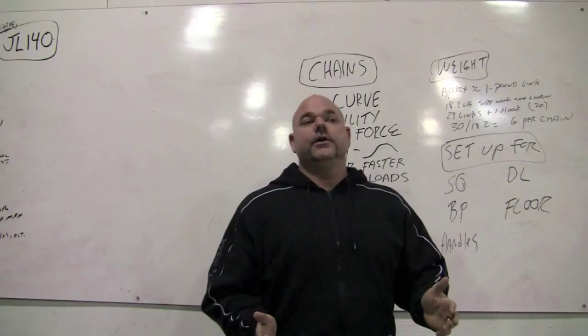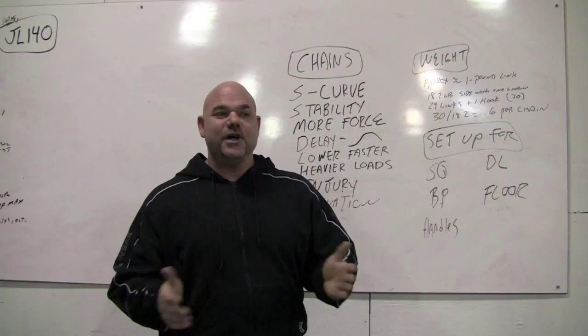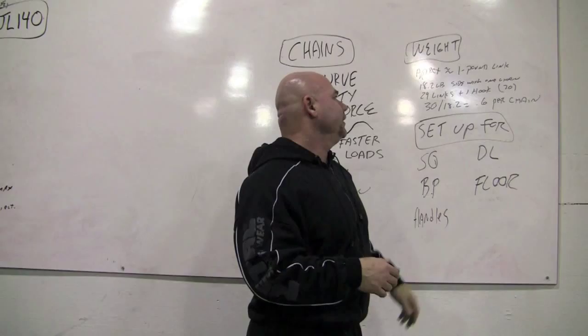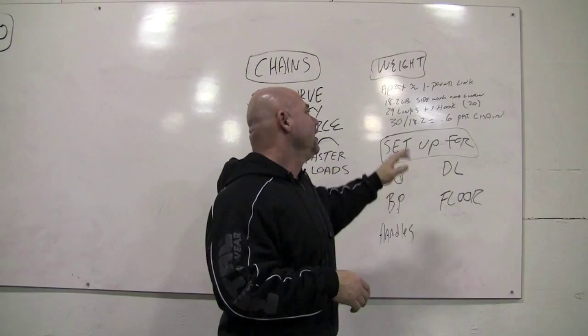With the chain setup that we have, the easiest thing to do is to just say each link weighs approximately one pound. That's the no-brainer powerlifter side of me. But if you want to know exactly what it weighs, each side of the chain setup is going to weigh 18.2 pounds. There's 29 links in one hook, so figure 30 hooks,